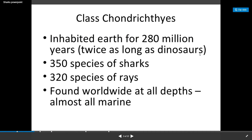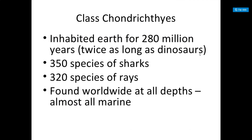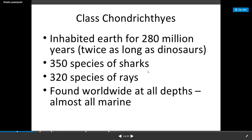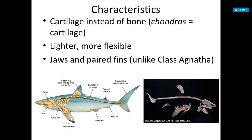They've inhabited the earth for 280 million years. There are 350 species of sharks and 320 species of rays, and they're found worldwide at all depths. They're almost always marine.